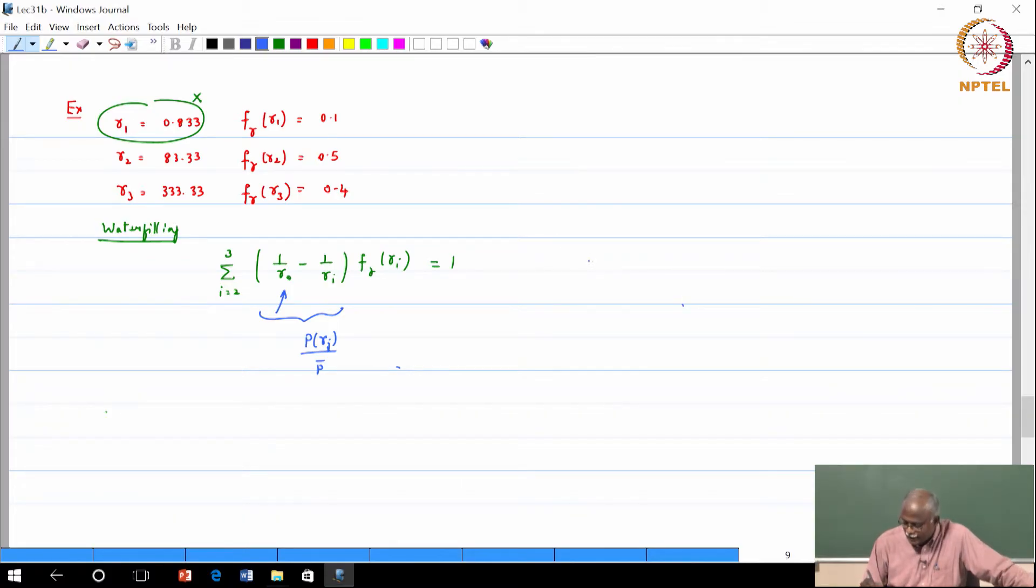So it is a numerical exercise. So we calculate gamma 0 is equal to 0.89. That means your water filling level is at 0.89.